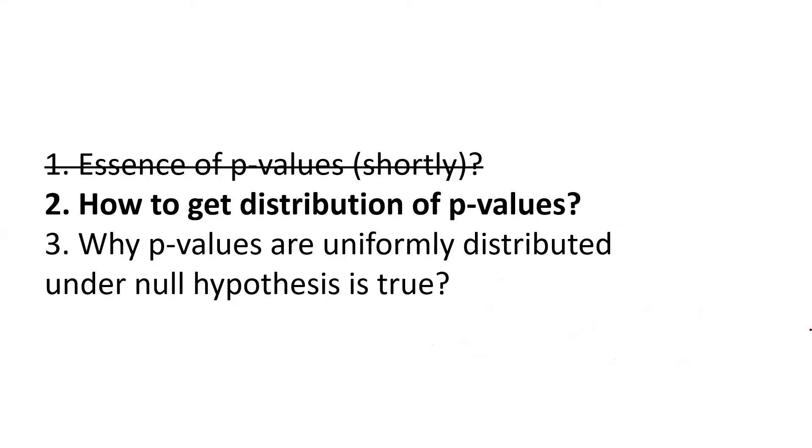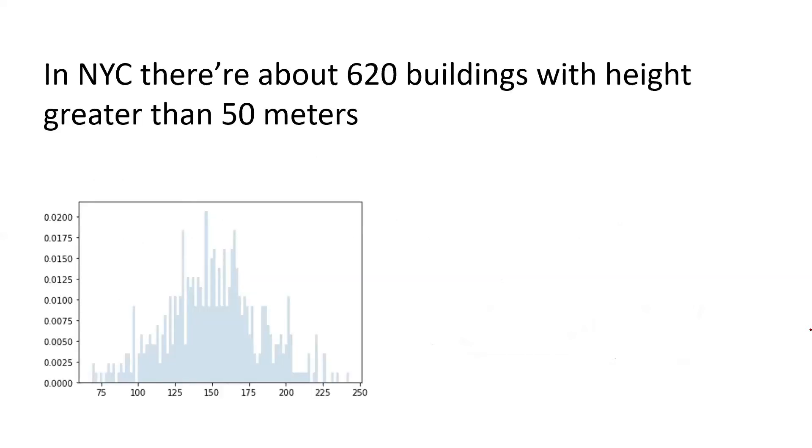And after now we understand more or less what is p-value, we need to get how to get this distribution of p-values. So if you Google a bit and find information about New York City, then you will find out that there are about 620 buildings with height greater than 50 meters. Yeah, somebody might say that it should be like 100 meters of height in order to be considered as a skyscraper. But as of now, let's assume 50 meters. And in Python, I have just plotted all of them here earlier. These are how they are distributed.